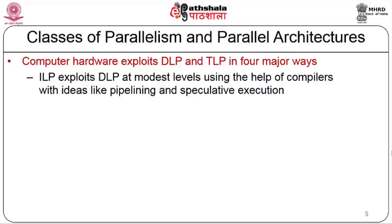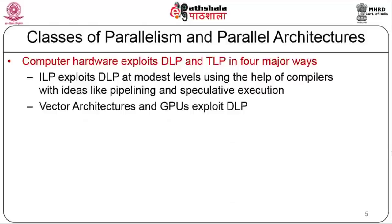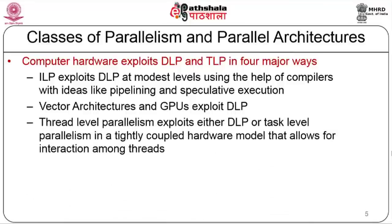Computer hardware exploits data level parallelism and thread level parallelism in four major ways. ILP exploits DLP at modest levels using compilers with ideas like pipelining and speculative execution. Vector architectures and GPUs exploit data level parallelism. Thread level parallelism also provides extensive support, as seen in the Niagara processor example.